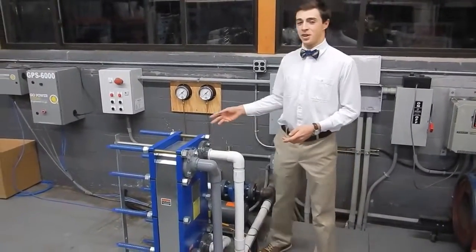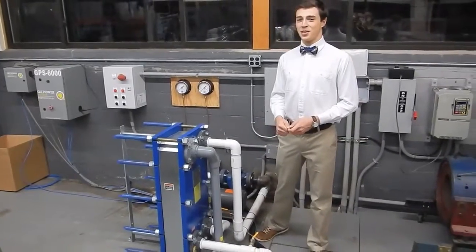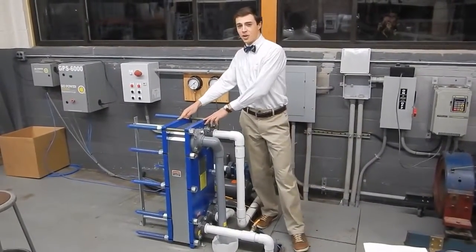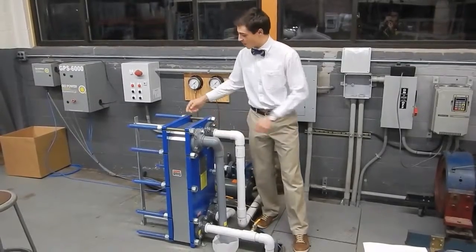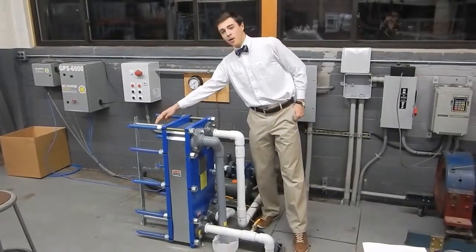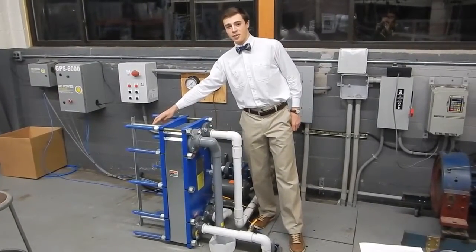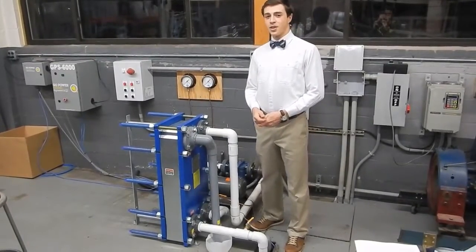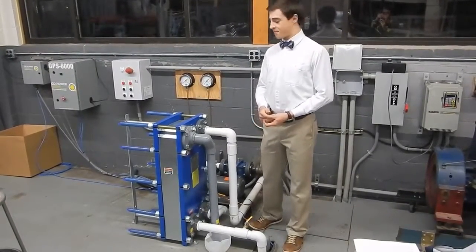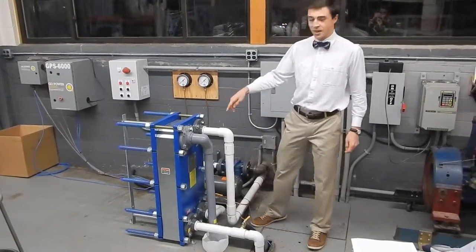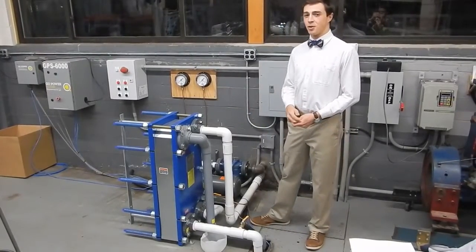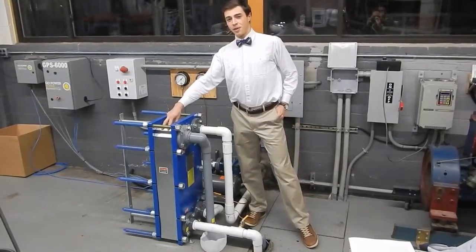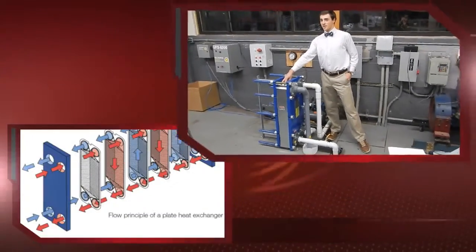Here we have a real plate type heat exchanger. Let's take a look at a few of the exterior components. On either side lie the covers, which enclose the assembly. The carrier rail supports the internal components. The tie bolts along the perimeter hold the covers together, sandwiching the assembly. The four pipes connected serve as the inlets and outlets for the hot and cold fluids. Underneath this aluminum sheath lie the plates themselves, which is where all the magic happens.